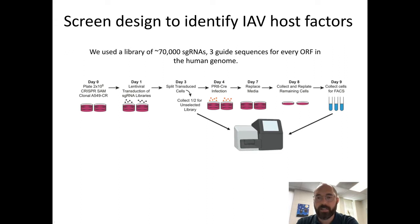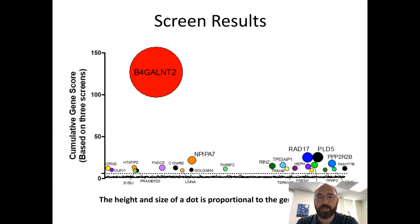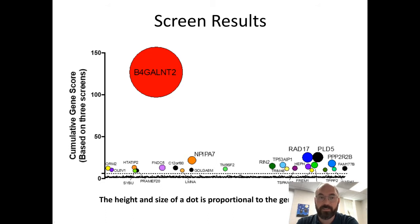We then sequence those guide RNAs to see what was enriched compared to before the virus was applied. Replicate screens show strong enrichment for a small subset of guide RNAs. Bioinformatic analysis predicts which genes are being upregulated, and in the resulting plot — where dot size and height reflect abundance in sequencing — one gene stands out clearly: B4GALNT2 is by far the most enriched in our screen, most abundant among cells that became resistant to the virus and were not green.